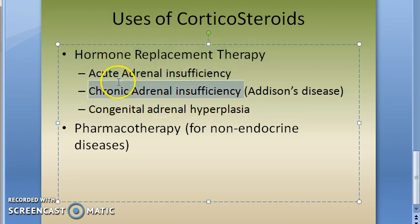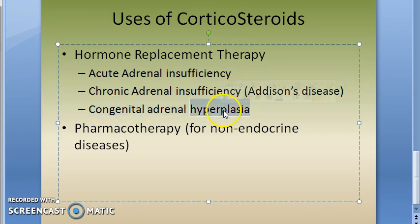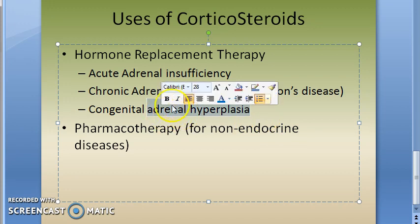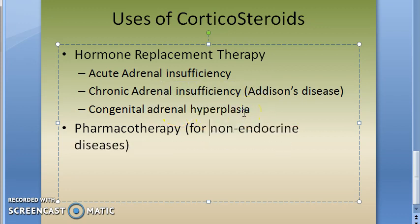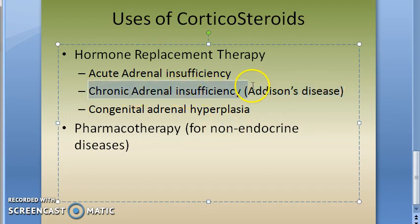For hormone replacement therapy, conditions include adrenal insufficiency, congenital adrenal hyperplasia — where the synthesis of hydrocortisone and aldosterone is impaired — and Addison's disease, which is adrenal insufficiency. Remember, there could be depression in Addison's disease, as we studied in antidepressants.